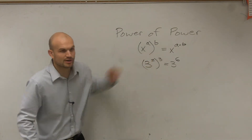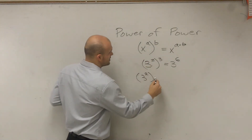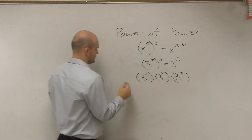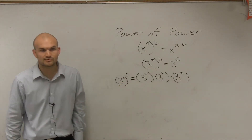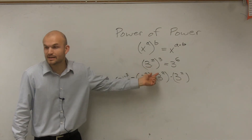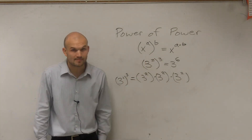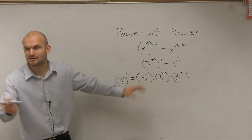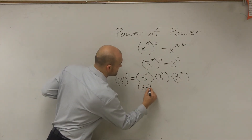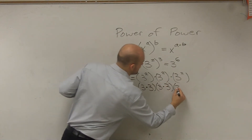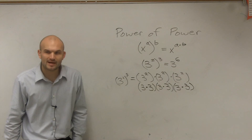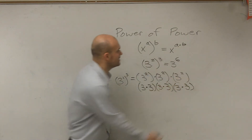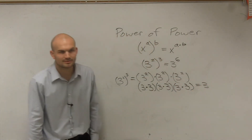Let's see exactly what 3 squared cubed means: it means 3 squared times 3 squared times 3 squared. You're taking whatever's inside the parentheses and multiplying it by itself three times. And what does 3 squared really mean? That means 3 times 3. So really this is 3 times 3, times 3 times 3, times 3 times 3 — which is equivalent to 3 to the sixth power.